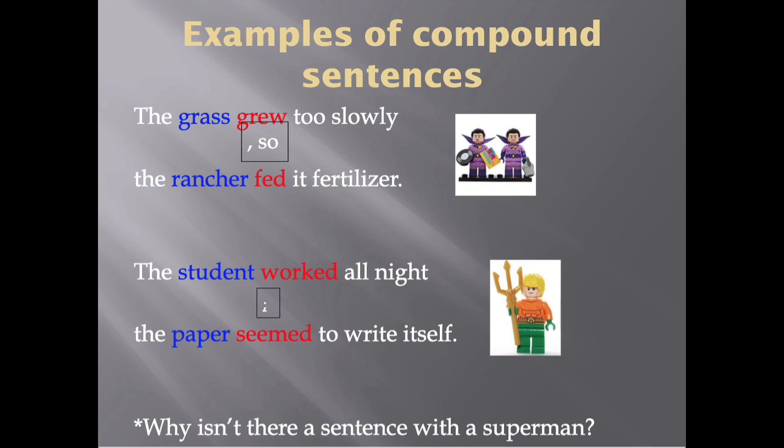Here are some examples of compound sentences. 'The grass grew too slowly, so the rancher fed it fertilizer.' Or: 'The student worked all night; the paper seemed to write itself.' If you remember from our fragments and run-on screencast, a comma and a coordinating conjunction is one way to fix a run-on sentence. That's why I've put the wonder twins picture there — because the wonder twins serve as the dividers that make this a correct sentence. Your comma is one twin, your conjunction is another twin, and together they separate the two ideas correctly. A semicolon is the Aquaman — the semi-cool way to separate two complete ideas so that you don't have a run-on.